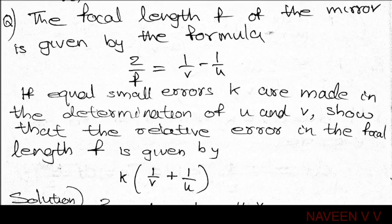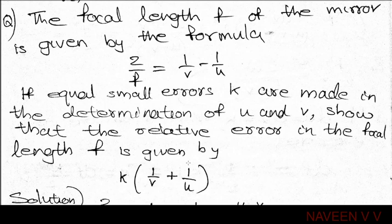Next problem. The focal length f of the mirror is given by the formula 2/f = 1/v minus 1/u. If equal small errors k are made in the determination of u and v, show that the relative error in the focal length f is given by k times (1/v + 1/u).